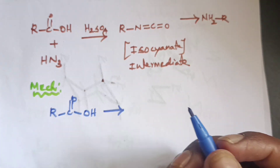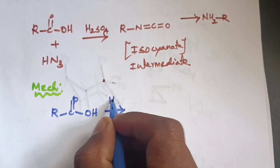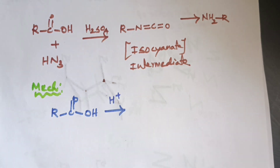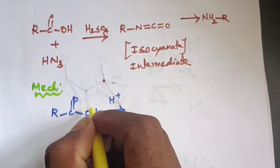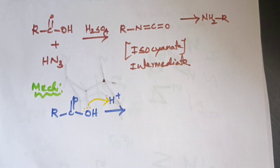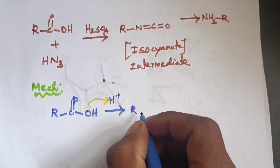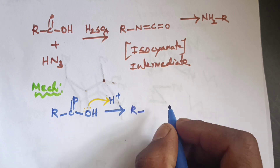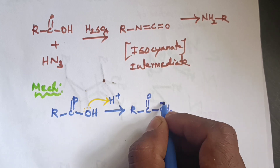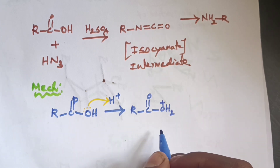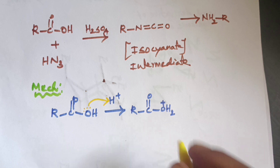H2SO4 produces H+. The oxygen of the carboxylic acid has a lone pair, so it abstracts this proton. Therefore, C(=O)-OH2+ is obtained. The OH2+ is a good leaving group.